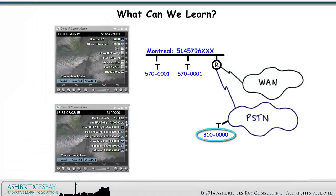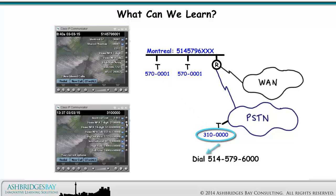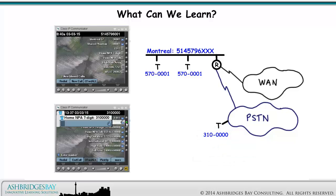Here's a call from an outside caller to Montreal phantom number 570-0001 via the auto attendant at 514-579-6000. You can transfer to either the internal number or the 4 or 5 digit extension. First, dial 514-579-6000 on the outside phone.